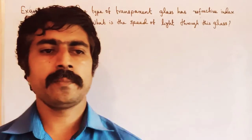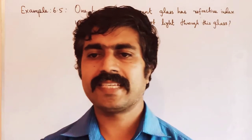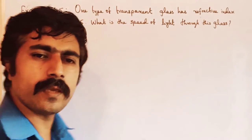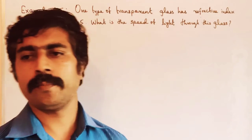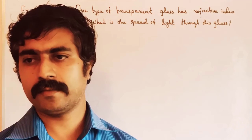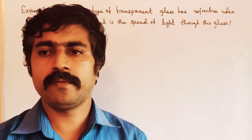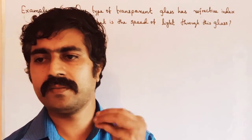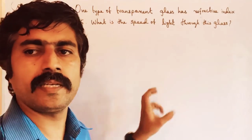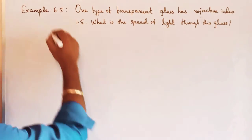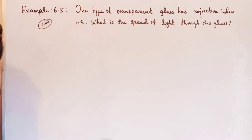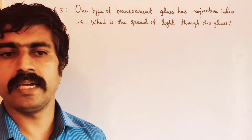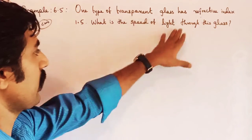Hi students. So now we have 2 more problems — this is the main problem. Why is it the main problem? Mostly the slow learners and some students have to choose a simple question. So this is a 2-mark question. Now we have a topic: What is the refractive index?